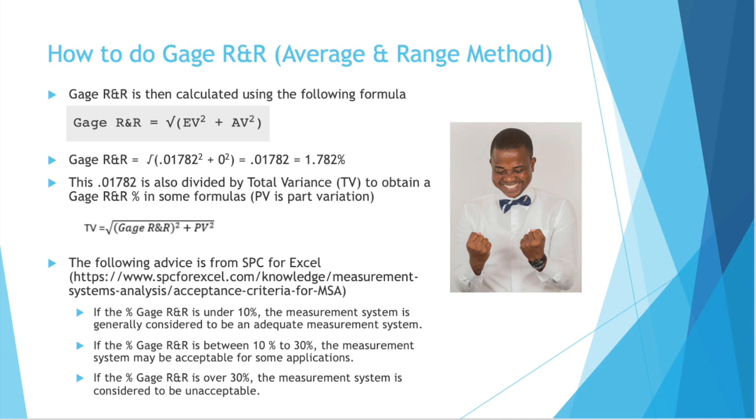Sometimes you'll see that value, the 0.01782, divided by the total variance, the TV, to obtain a gauge R&R percent in some formulas, PV being part variation in the formula below.